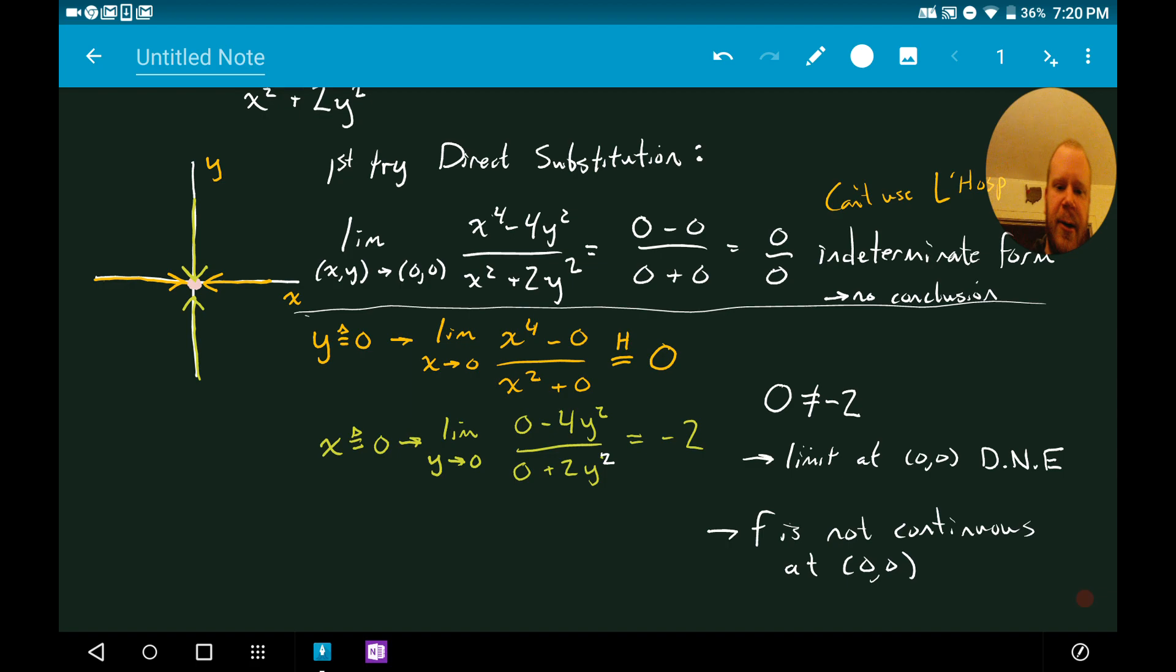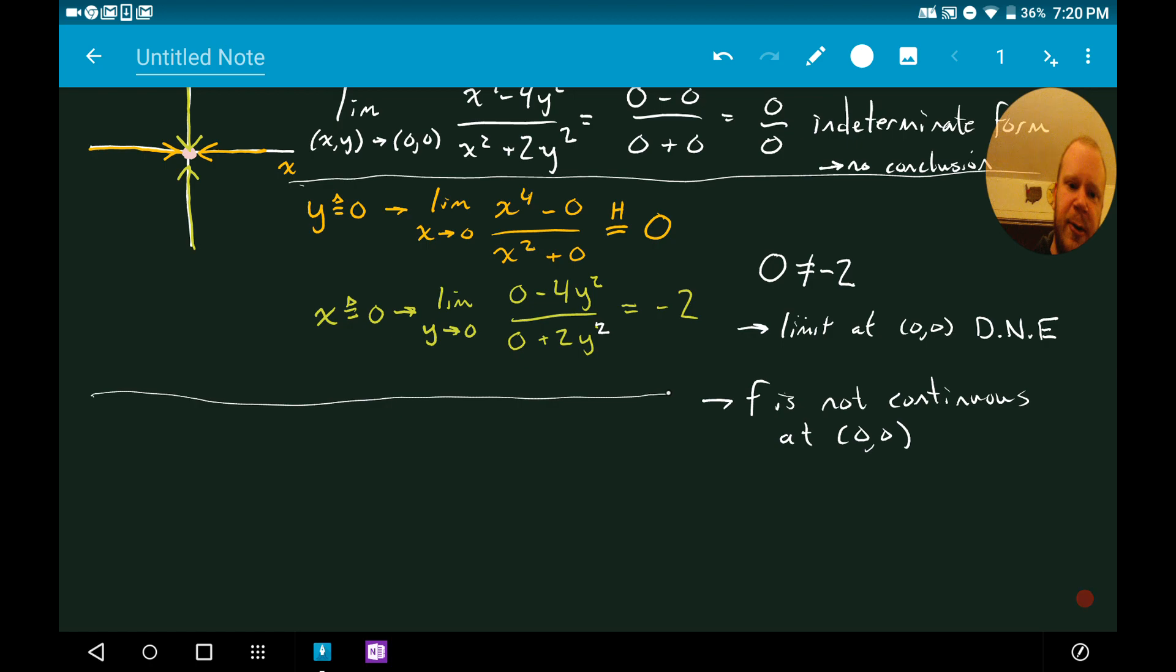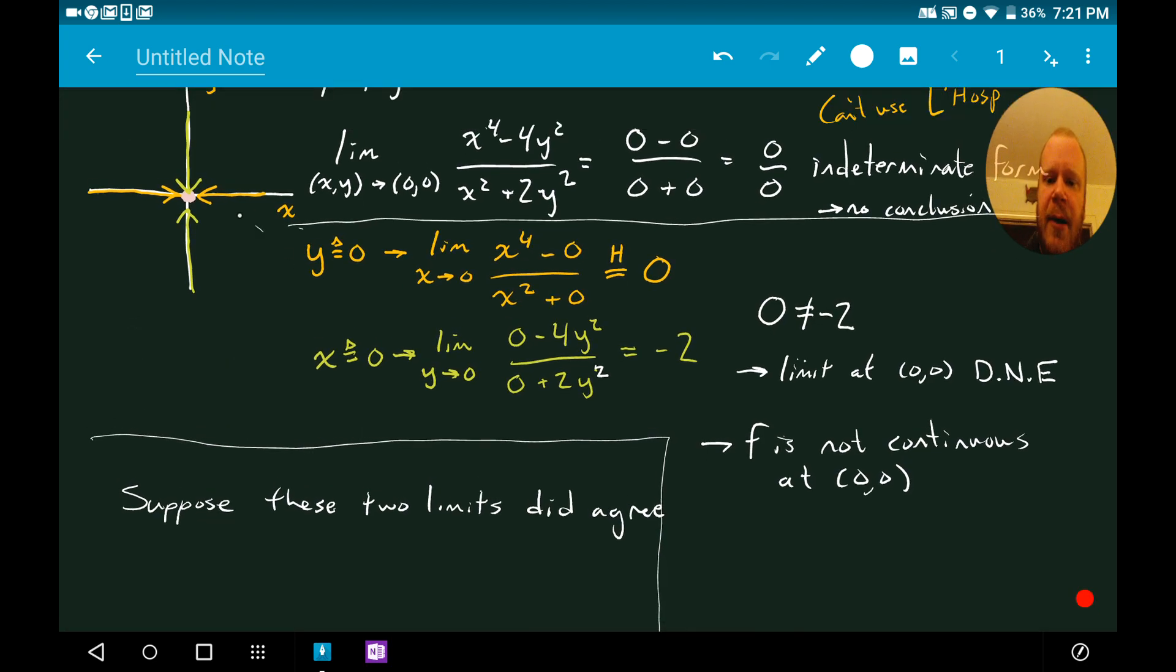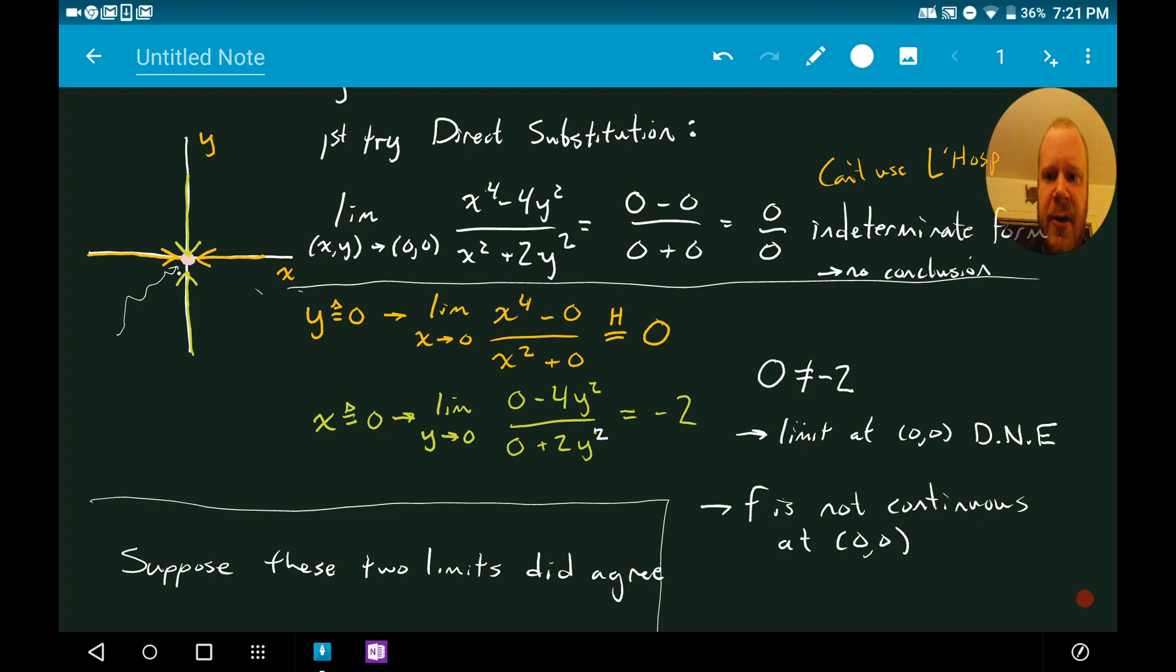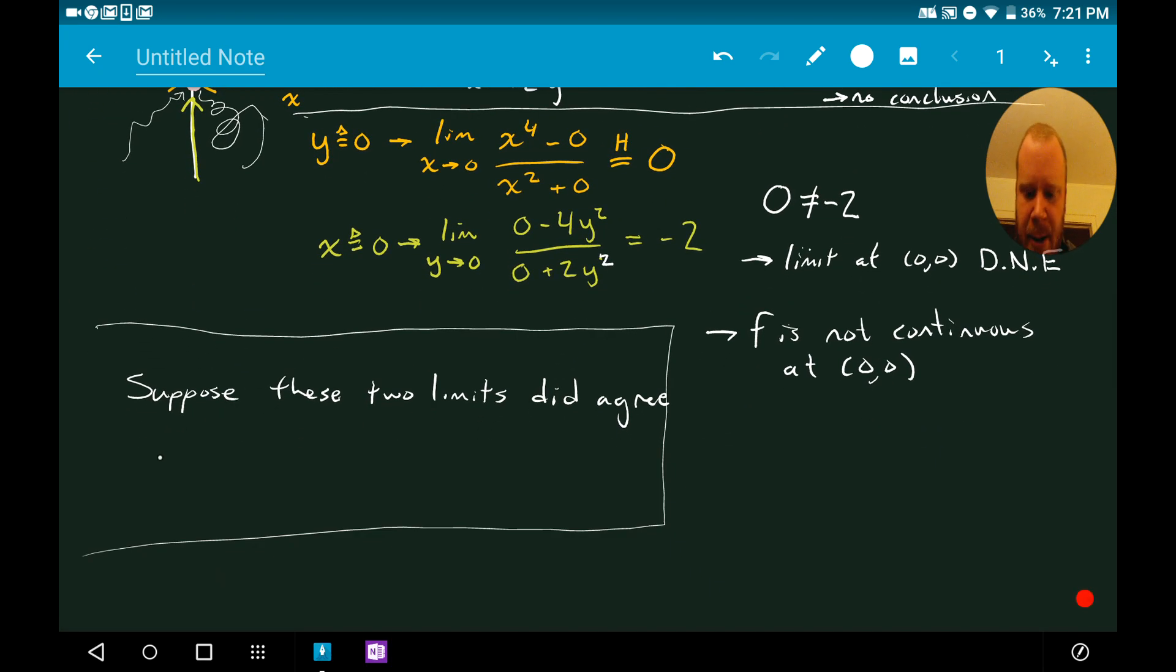Now the question that I want you to consider with this is suppose these two limits did agree, so maybe we got negative 2 here and then negative 2 here. The question I want to ask is does that mean that the limit exists? Have we proven that the limit exists here? And the answer is no, we haven't because these only represent two paths that we could have taken to reach that point. So we still have this one, this one, a lot of different paths to consider. So we can say here that we still haven't shown that the limit exists.